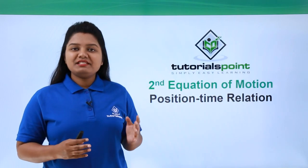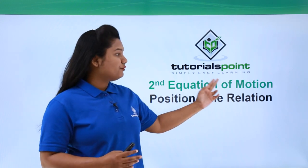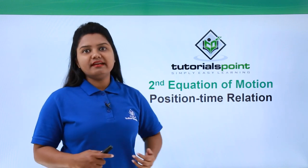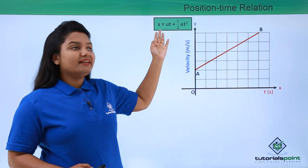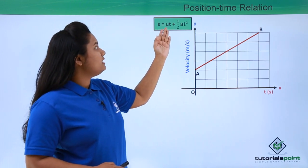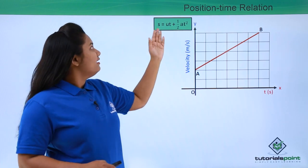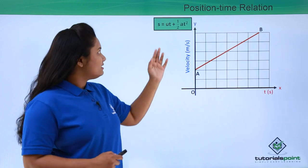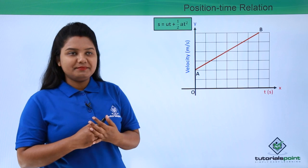Hello everyone. In this video we will be deriving our second equation of motion, which is otherwise called the position-time relation. We already know the second equation of motion: s equals ut plus half at squared, where s is the displacement, u is the initial velocity, t is the time taken, and a is the acceleration of the body.